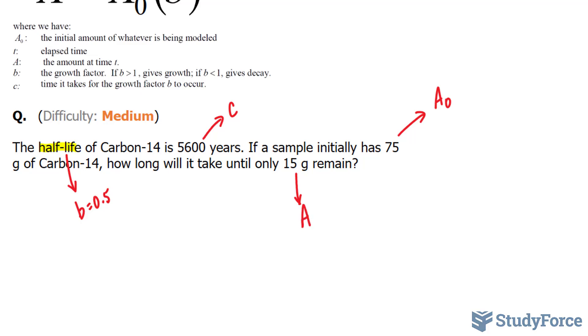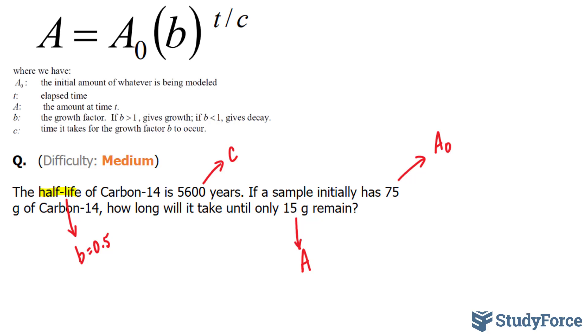Now what we're going to do next is plug in this information into the formula that we have above. To do this, we're going to replace A with 15, A₀ with 75, B will be 0.5, T will remain the way it is, and C will be 5,600.